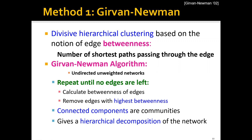The Girvan-Newman algorithm is a divisive hierarchical clustering algorithm based on the notion of edge betweenness, which is the number of shortest paths passing through an edge. The algorithm works as follows: repeat the following two steps until no edges are left. First, calculate the betweenness of each edge in the graph. Second, remove the edge or edges with the highest betweenness — note there may be multiple edges with the same betweenness. The connected components are treated as communities, and the process gives a hierarchical decomposition of the network.